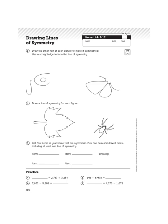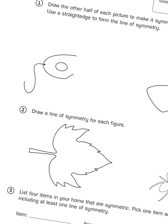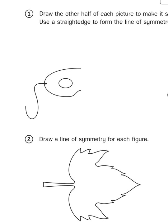Let's take a look at the task for number one. It says draw the other half of each picture to make it symmetrical, use a straight edge to form the line of symmetry. So right here we have what looks to be an oval and some squiggly line.